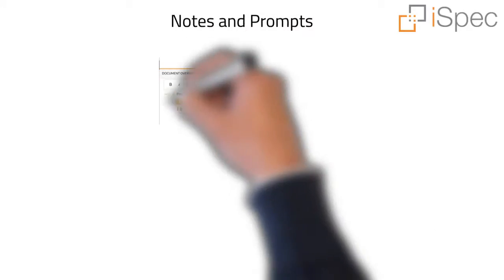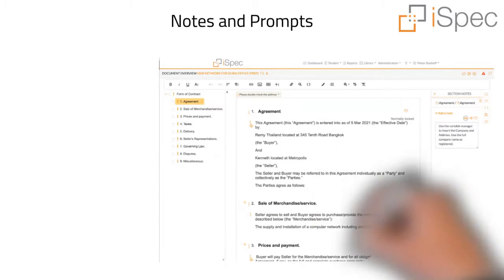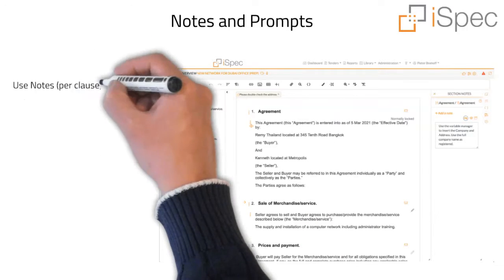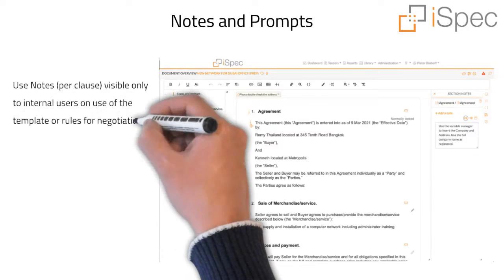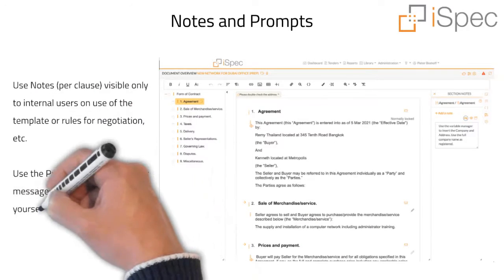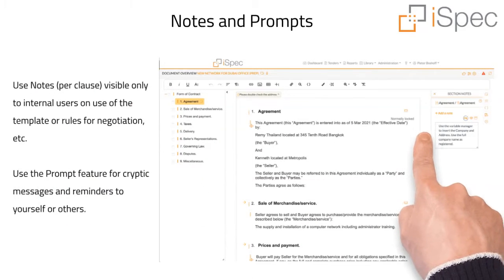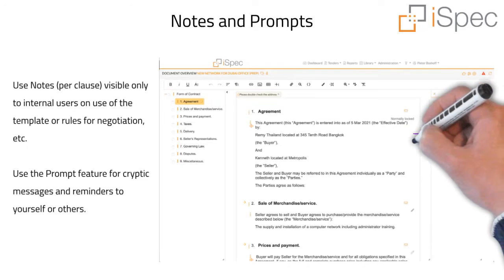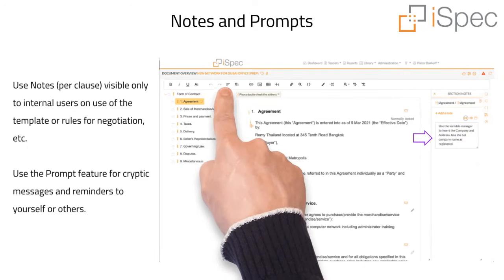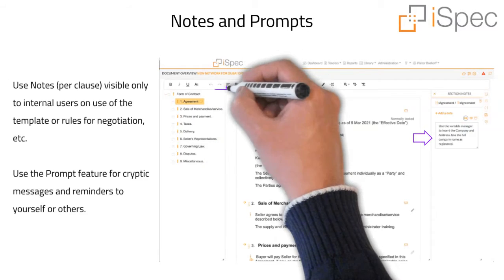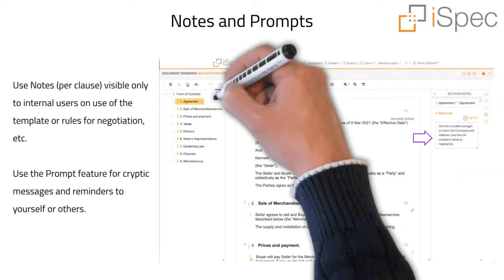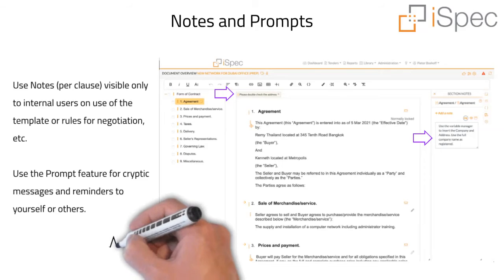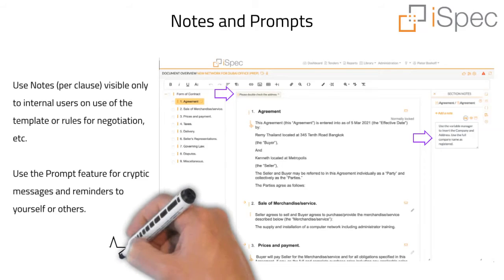Each clause or section can have notes attached to it that are only visible to internal users, describing use of the template or rules for negotiation, etc. Use the prompt feature to create cryptic messages and reminders to yourself or others.